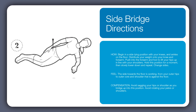Coming into the side bridge, this is the easier variation where you're on the forearm and the knees as opposed to the forearm and the sides of the feet. You're on your side on the floor, knees and hips on the floor, and then you lift the hips up in line with the shoulders. You can stay here or do reps.